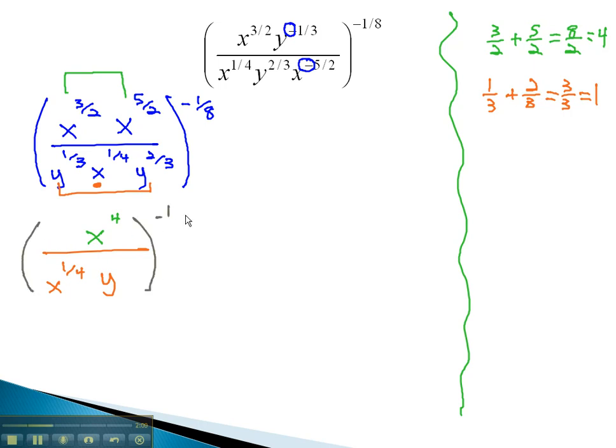All of this is still with the negative 1-eighth as the external exponent. We can continue simplifying by now trying to combine the x's. With division, we subtract exponents, 4 minus 1-fourth.